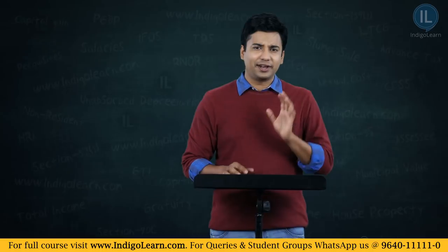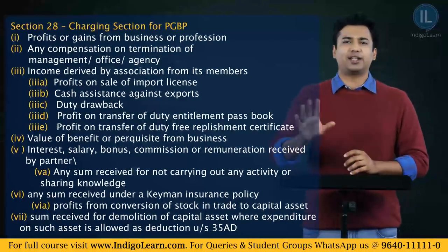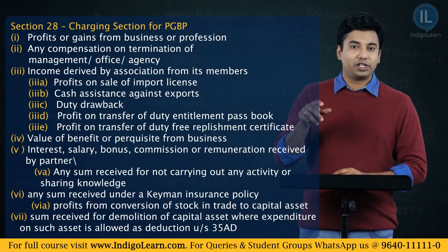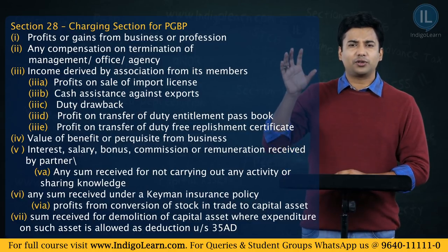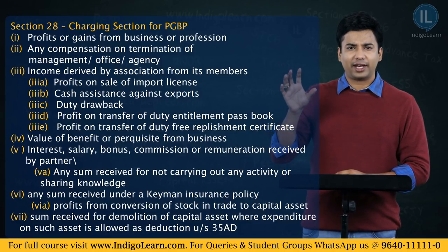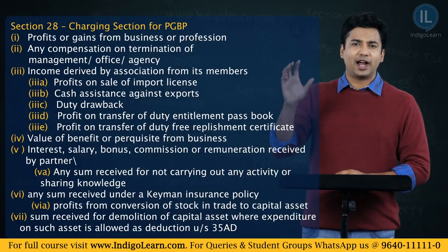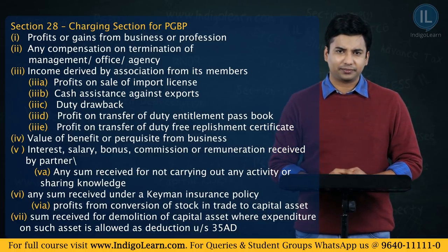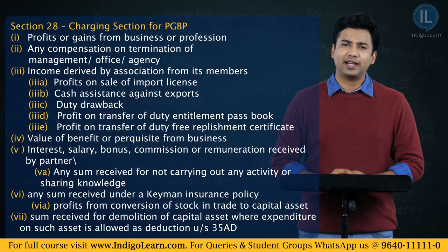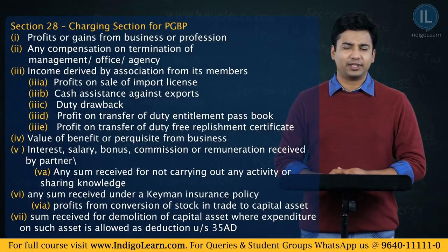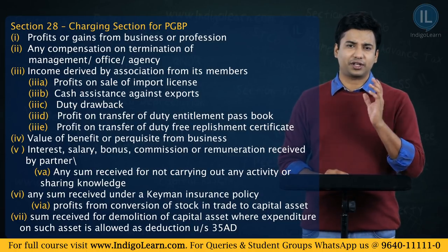If you understood what is given in section 28, section 28 does not talk about in which year to tax. It only talks about what are those incomes to be taxed or included under the head PGBP — what are those revenues to be included. Section 28 is the primary charging section.